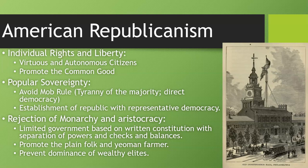What you get first is a limited government based on a written constitution that separates powers and puts checks and balances in place so that those separate groups of power do not overpower one another. Checks and balances ensure that all branches work together and no one branch gets too strong. They promote the idea of the plain folk — the yeoman farmer, the regular person — aimed at preventing the dominance of wealthy elites. Wealthy elites are not necessarily supposed to make all the rules.